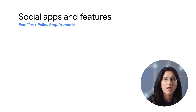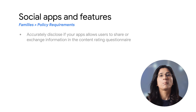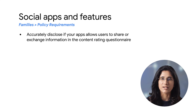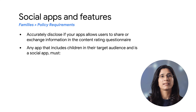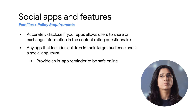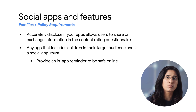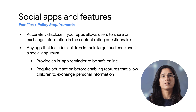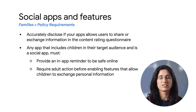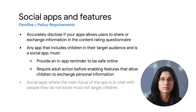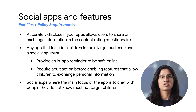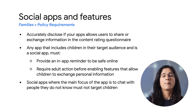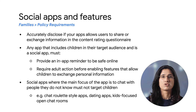Here are the requirements you should know if your app allows users to share or exchange information. You must accurately disclose these features in the content rating questionnaire. Any app that includes children in their target audience and is a social app must provide an in-app reminder to be safe online and to be aware of the real-world risks of online interaction before allowing child users to exchange free-form media or information. You must also require adult action before enabling features that allow children to exchange personal information. Remember, social apps where the main focus is to let users chat with people they do not know must not target children — examples include chat relay-style apps, dating apps, and kids-focused open chat rooms.